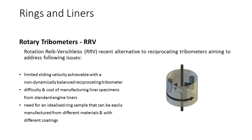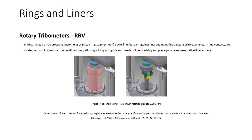The Rotations-Reib-Verschleiß (RRV) test rig is a more recent alternative to the assorted reciprocating tribometers and aims to address a number of issues, including the limited sliding velocity achievable with a non-dynamically balanced reciprocating tribometer, the difficulty and cost of manufacturing liner specimens from standard engine liners, and the need for an idealised ring sample that can be easily manufactured from different materials and with different coatings.